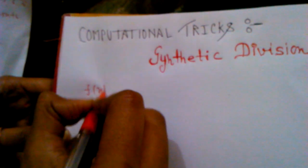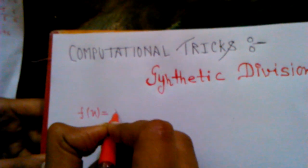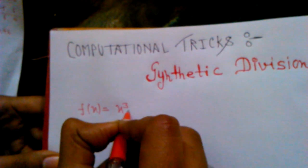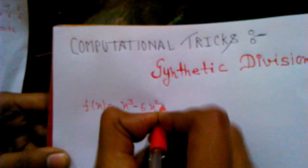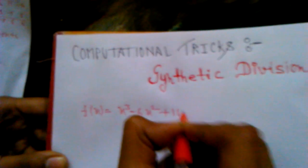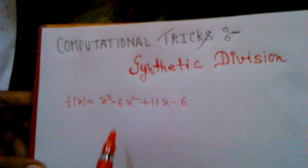For example, if I am taking f(x), this is a polynomial such that x³ - 6x² + 11x - 6.